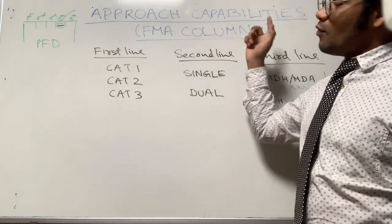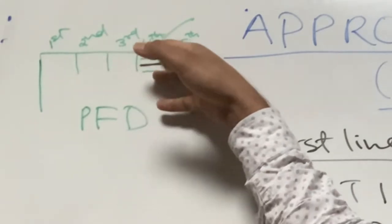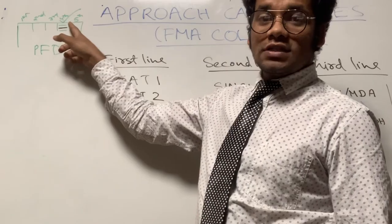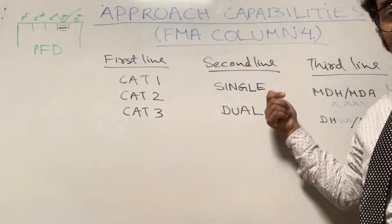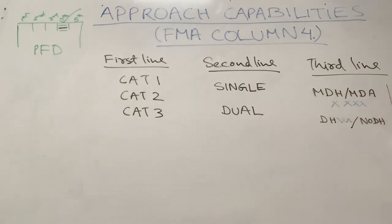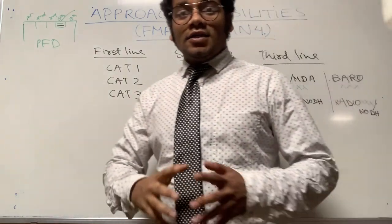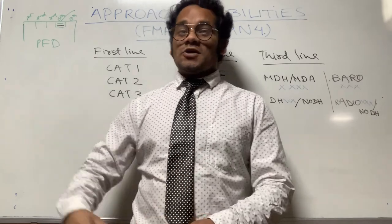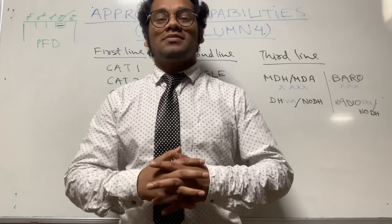To summarize, we have discussed about the approach capabilities which appear in column four on the PFD. We covered all three lines: on the first line we get CAT 1, CAT 2, or CAT 3; on the second line we get SINGLE or DUAL; and on the third line we get MDA, DH, or BARO — all this for non-precision or precision approaches. I'll come up with a new topic in my next session. If there is any doubt, do comment below and ask questions. Thank you.